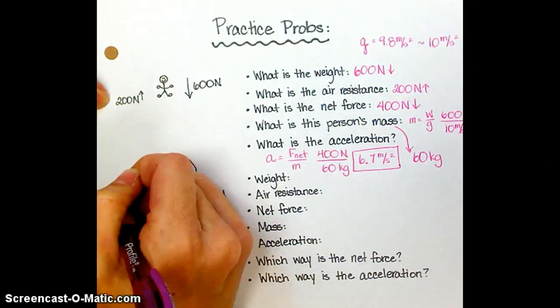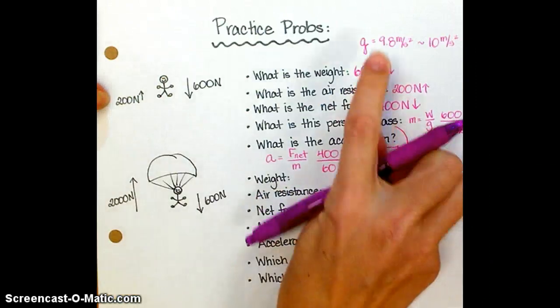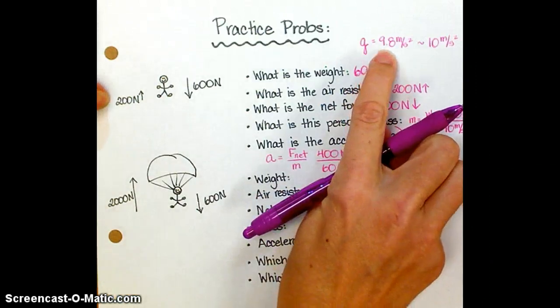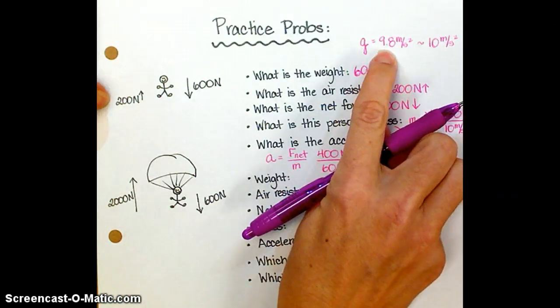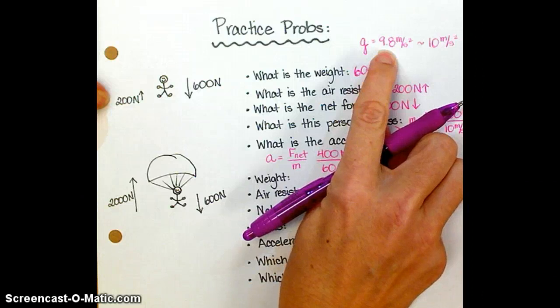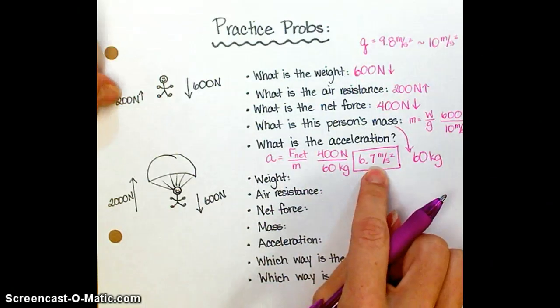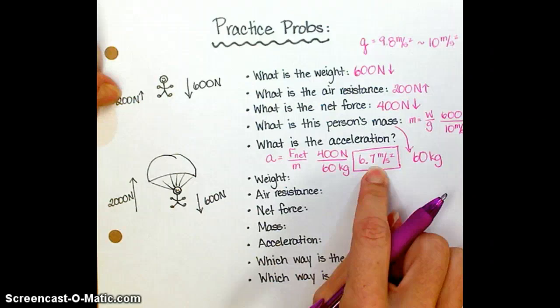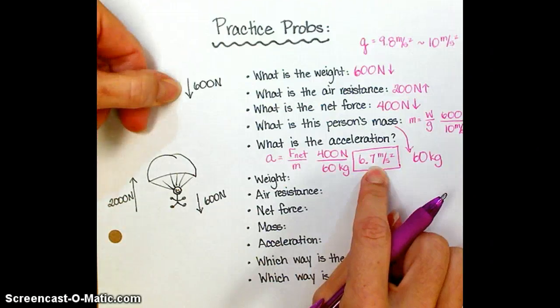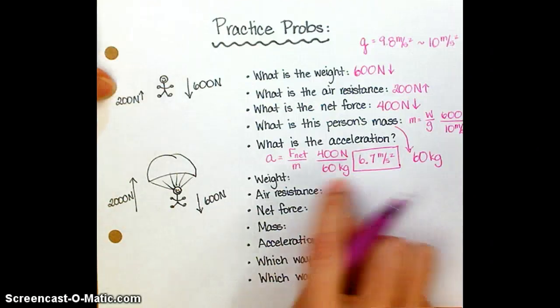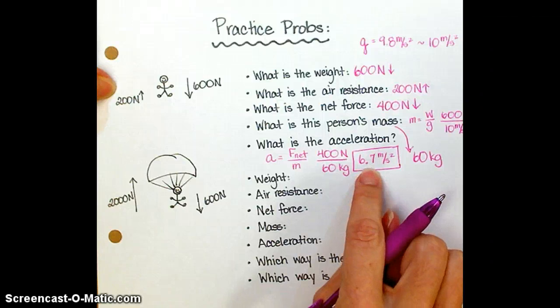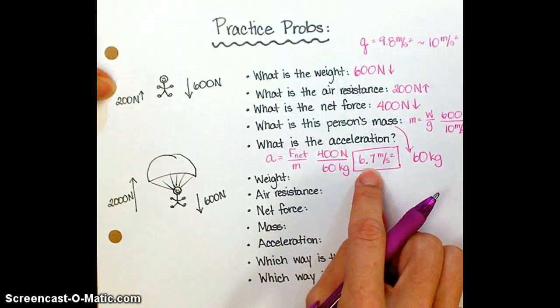Now, without air resistance, we know this person would accelerate towards the surface of the earth at a rate of 9.8 meters per second squared. But the acceleration is actually less than that because of the force of air resistance that counteracts the force due to gravity, so we get an acceleration that's less than 9.8 meters per second squared.